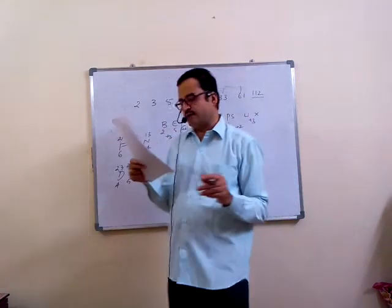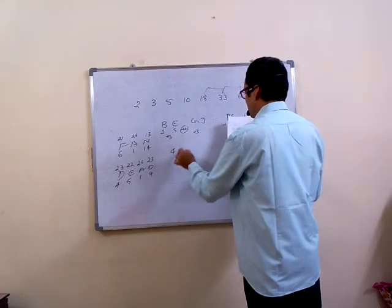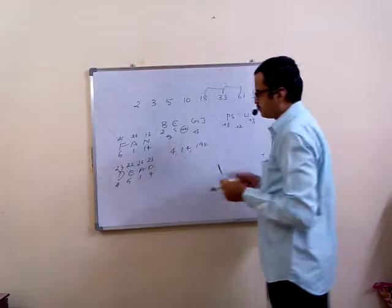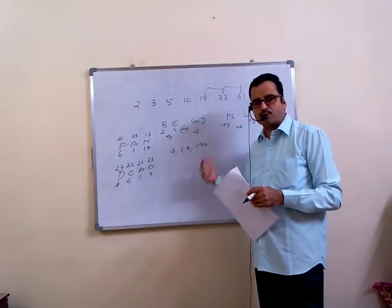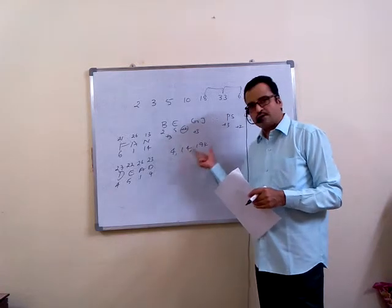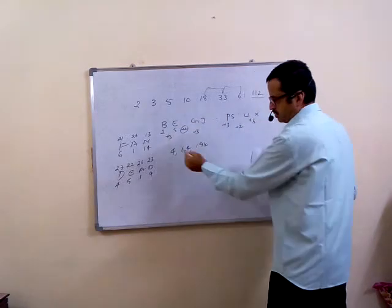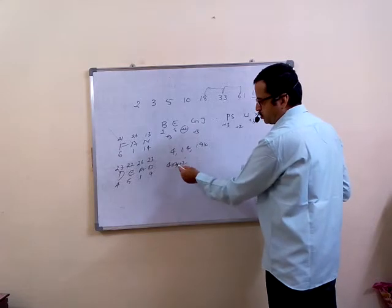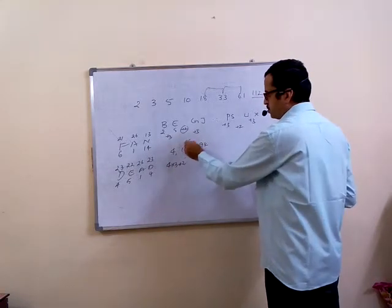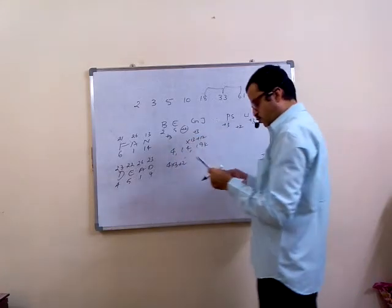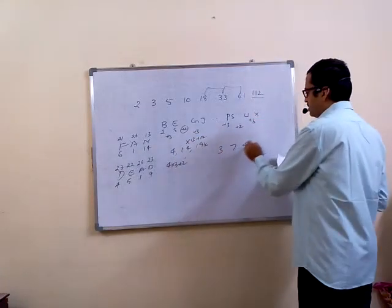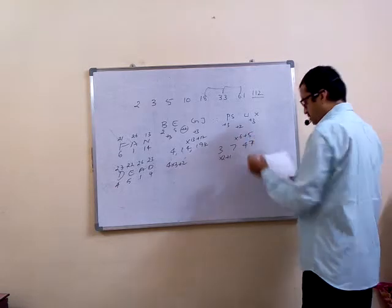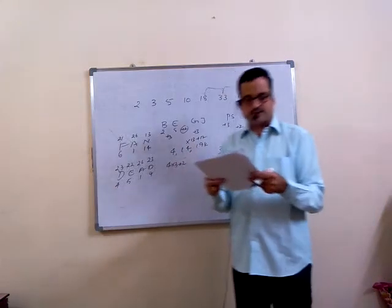Now they gave you a set of numbers, based on number analogies. 4 is to 14 is to 194. What is the logic? 4 into 3 plus 2. In the same way, 14 into 13 plus 12. The first option is 3, 7, 47. 3 into 2 plus 1 equals 7. 7 into 6 plus 5 equals 47. Answer is ninth question, first option.